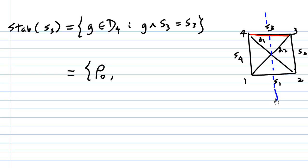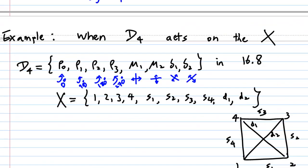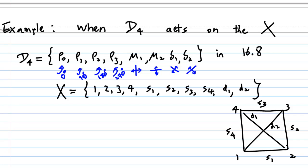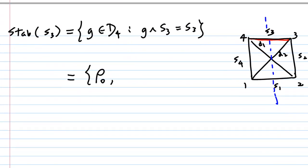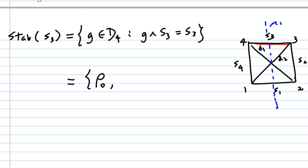A vertical reflection bisecting the square will leave S3 stable at S3 — that reflection is called mu1. The rest of the symmetries will move S3 to other places such as S2, S4, or S1. So there are only two elements of D4 that fix S3, giving us the stabilizer of S3 as {rho0, mu1}.